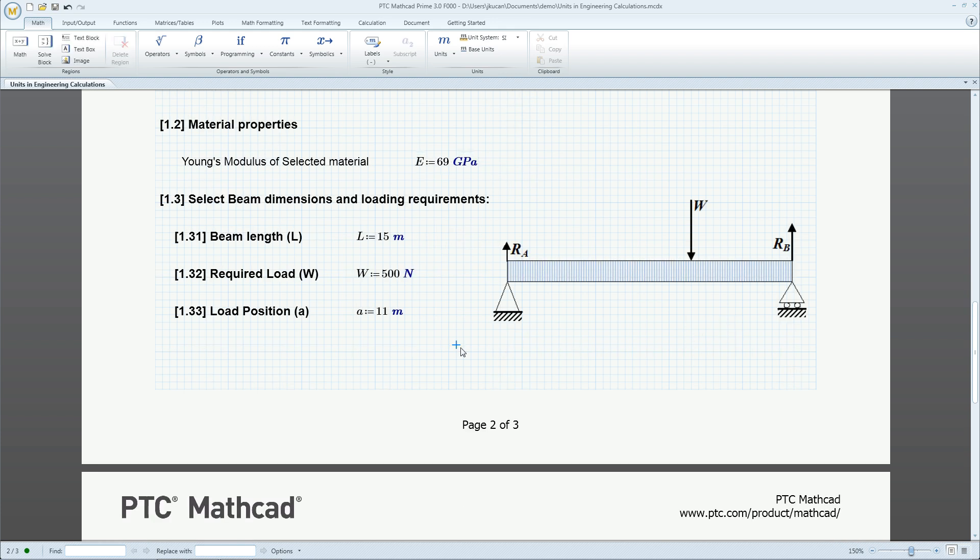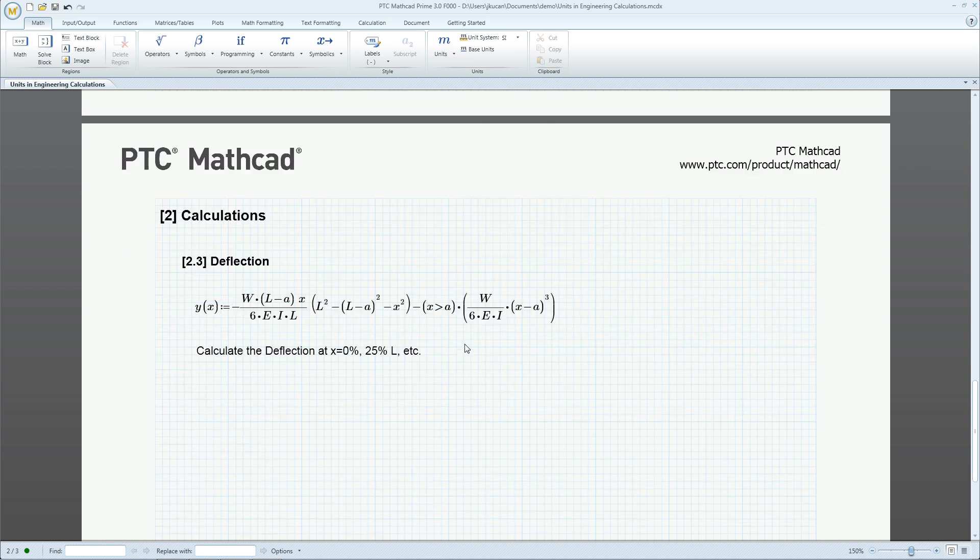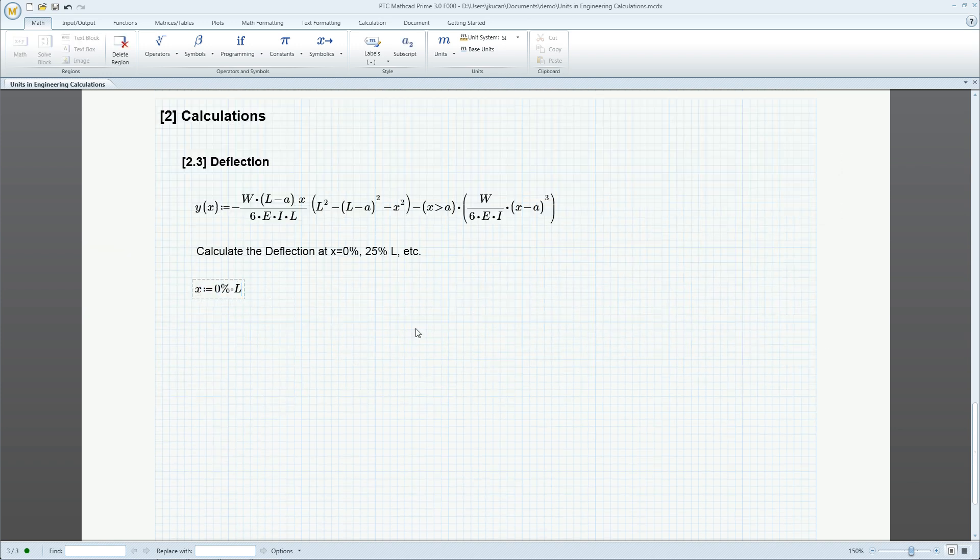These variables are now used in the equations for the moment of inertia and displacement. We calculate the deflection from 0 to L with 10% increments. The result is returned in meters by default.